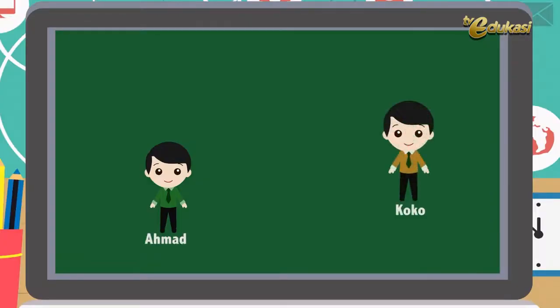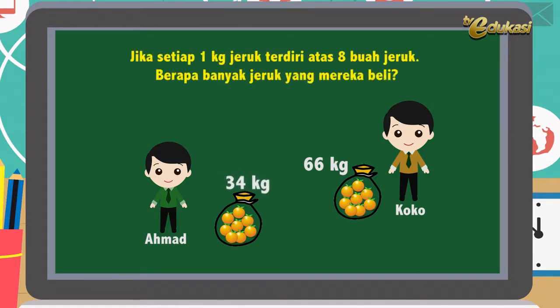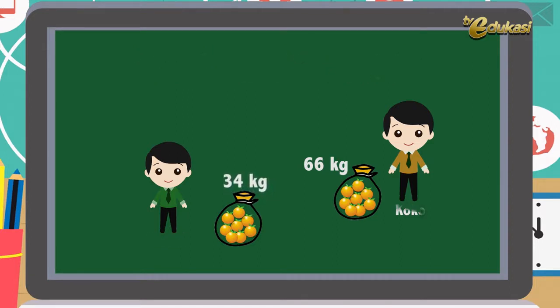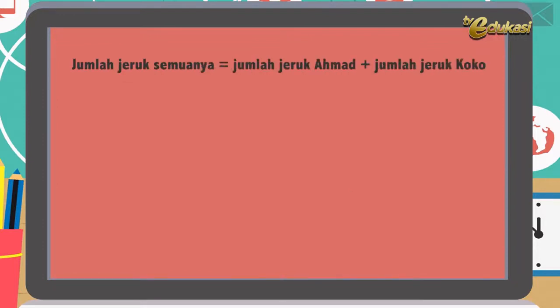Sekarang Bapak akan memberikan soal tentang sifat distributif dalam bentuk HOTS atau Higher Order Thinking Skill. Perhatikan soal berikut ini. Ahmad dan Koko membeli jeruk. Mereka masing-masing membeli 34 kg dan 66 kg jeruk. Jika setiap 1 kg jeruk terdiri atas 8 buah jeruk, berapa banyak jeruk yang mereka beli? Jeruk Ahmad 34 kg, jeruk Koko 66 kg. Jumlah jeruk setiap 1 kg sama dengan 8 buah. Jumlah jeruk semuanya sama dengan jumlah jeruk Ahmad ditambah jumlah jeruk Koko, atau sama dengan 34 dikali 8 ditambah 66 dikali 8.